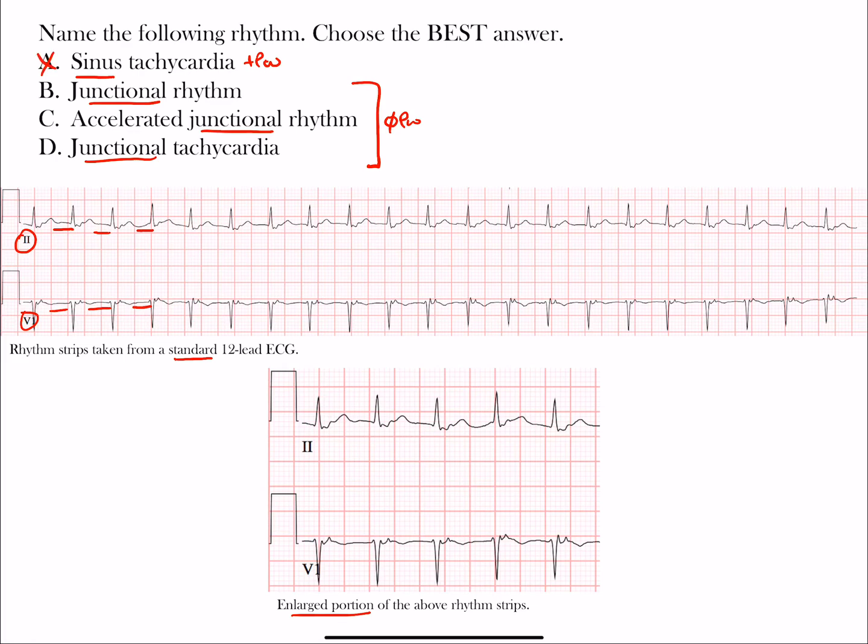That should automatically tell you this is not a sinus rhythm. P waves should precede the QRS complex. For our case here, sinus tachycardia is not the best choice, so it's got to be one of the other choices.